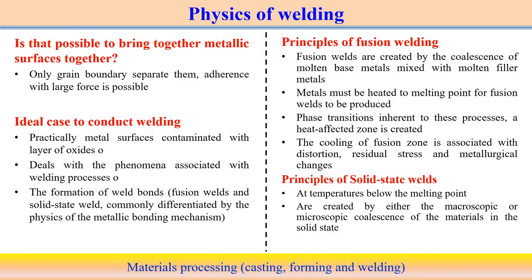In the fusion welding process, welds are created by coalescence of molten metal. We need to melt both components and then join them together. A certain amount of energy is required to melt the material above its melting point. Once melting occurs, we allow solidification and cooling of the liquid metal to ambient temperature, then bonding between the two components occurs.